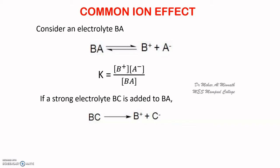Now what happens when you add BC to BA? BA is an electrolyte — there is an equilibrium existing between the ions and the unionized BA. BC is strong and completely ionizes. So when you add BC, there will be an increase in the concentration of B plus. This will alter the equilibrium of the system.